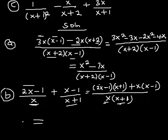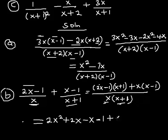Now I expand the brackets. 2x multiplied by x gives 2x²; 2x multiplied by 1 gives +2x. Then −1 multiplied by x gives −x; −1 multiplied by 1 gives −1. Opening the next bracket: x multiplied by x gives x²; x multiplied by −1 gives −x.